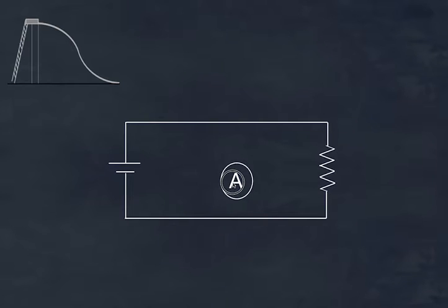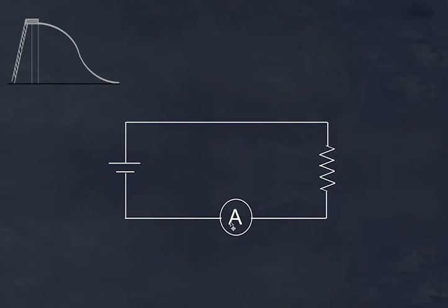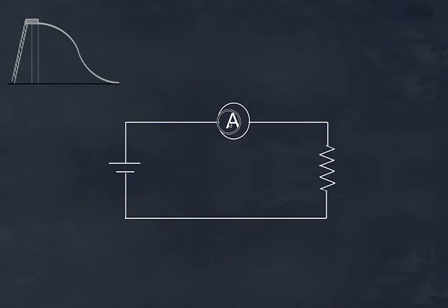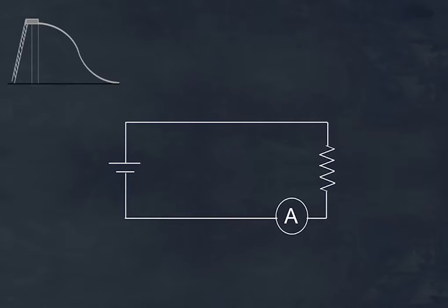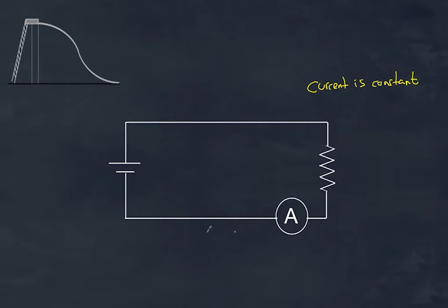Let's bring our ammeter along — and I hope you can see the relationship between ammeter and Amy. The ammeter is interested in the rate of flow of charge, measuring how many coulombs of charge are flowing at any given time — in this case, per second. If I put my ammeter here, or here, or anywhere along the circuit, I get the same value. For a simple circuit, the current is constant — it's the same value all the way through.